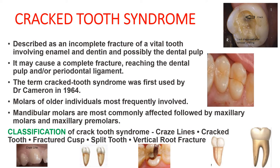Crack tooth syndrome is classified into five types: craze lines — superficial lines on the tooth surface; cracked tooth — the tooth is only cracked; fractured cusp — the cusp is fractured; split tooth — the tooth is split into two; and vertical root fracture — a vertical fracture of the root.